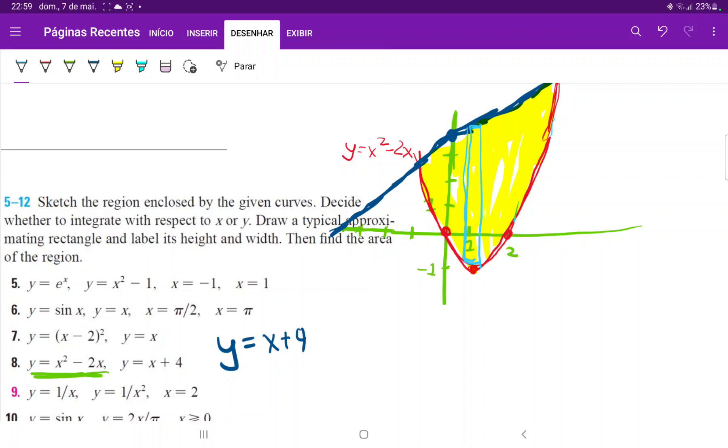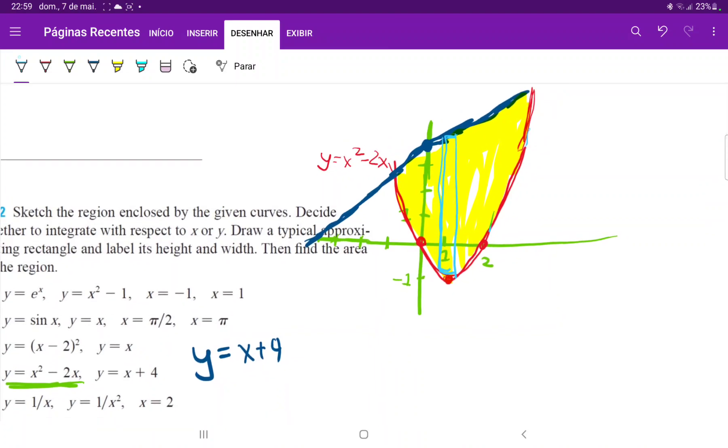Except we don't really know where the bounds of integration are. And to find the bounds, we do need to find where these two curves intersect. So, it's at this point over here and this other point. And to find where they intersect, we basically need to set them equal to each other. So, we have x plus 4 is equal to x squared minus 2x.